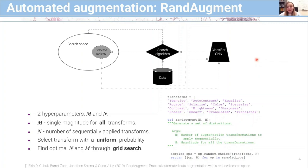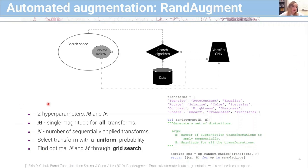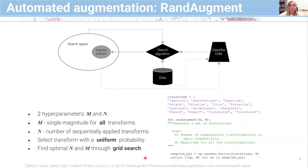In this study we utilize an automated augmentation method and adjust it to H&E stained histopathology. We opt for RandAugment for two reasons: firstly it is computationally efficient, and secondly it doesn't require almost any modifications to your existing training pipeline. In RandAugment the authors reduce the search space to only two hyperparameters, m and n, where m is a single constant magnitude for all transforms and n is the number of sequentially applied transforms, always selected with uniform probability. You find the optimal values of n and m through grid search.